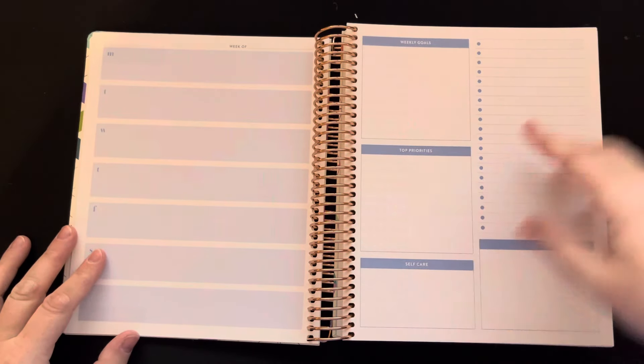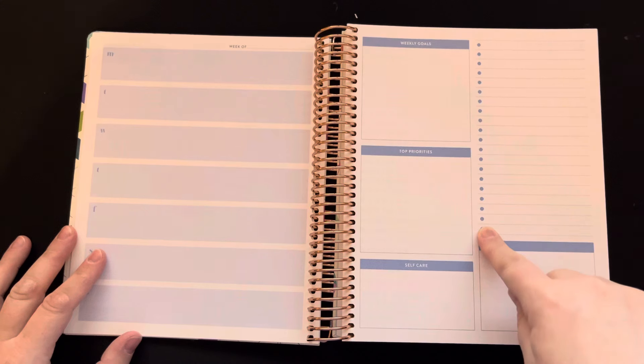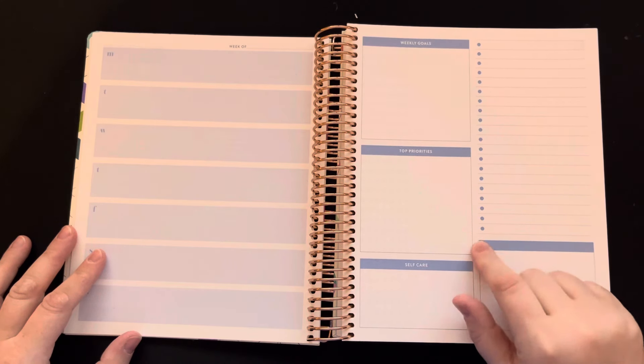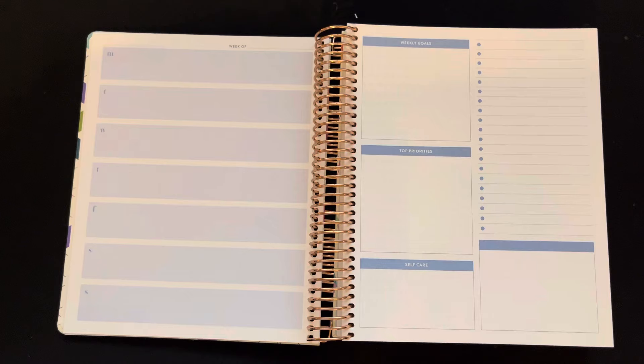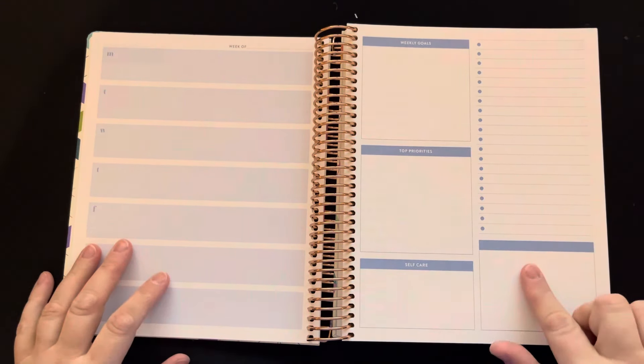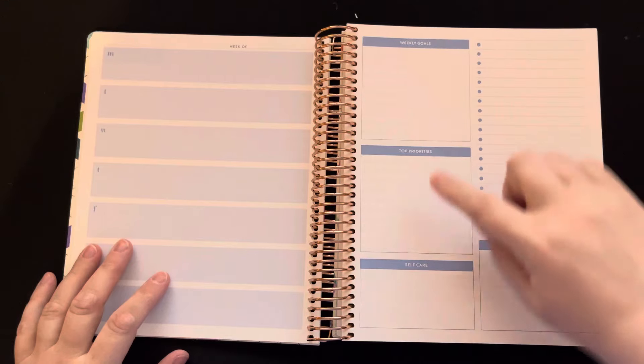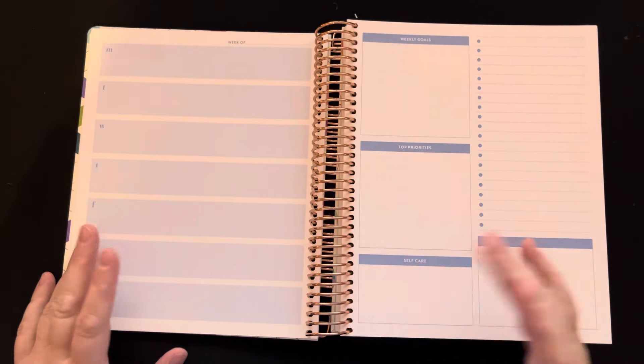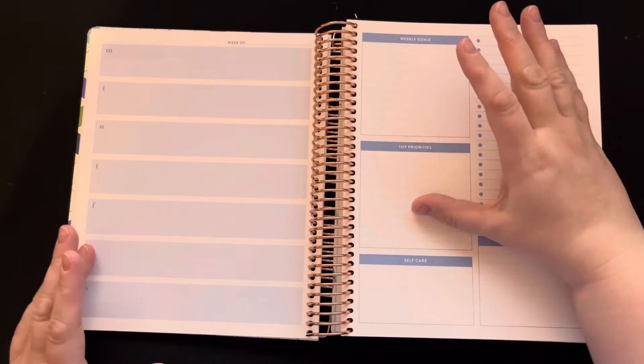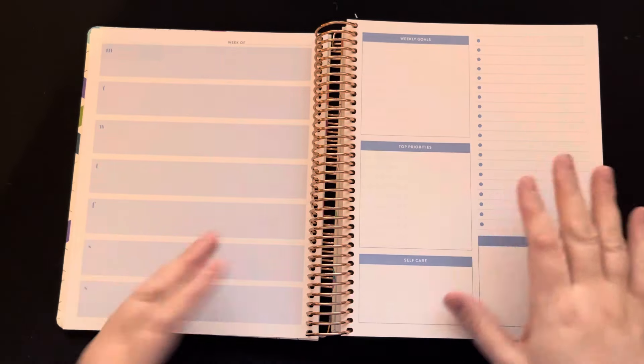And then on the opposite page, you have a task list. The reason I like the task list is because that's how I plan. I plan really in a list format and then you have an empty box down here. And then up here it says weekly goals, top priorities and self-care. Now, obviously you could rename those boxes to whatever you want. The difference between weekly goals and top priorities to me is like the same thing.